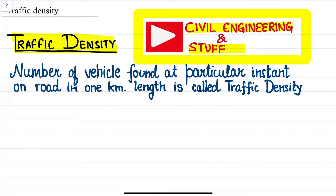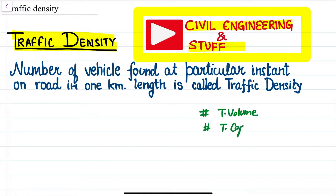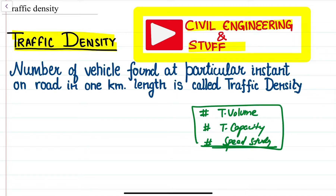If you have gone through the previous lecture, we have discussed about the fundamental parameters of traffic engineering in the macroscopic category — traffic volume, traffic capacity, and the variety of speed studies conducted in traffic engineering. In the same category of fundamental parameters, we have another important parameter called traffic density.